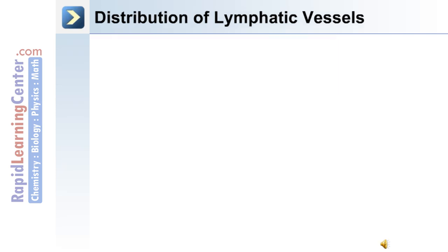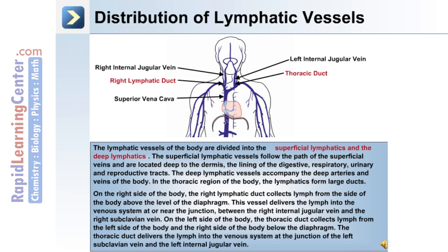Lymphatic vessel distribution divides into superficial and deep lymphatics. The superficial lymphatic vessels follow the path of the superficial veins and are located deep to the dermis, lining the digestive tract and the respiratory, urinary, and reproductive tracts. The deep lymphatic vessels accompany the deep arteries and veins of the body.